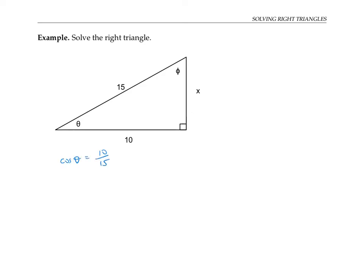Cosine is a good trig function to use here because this equation relates our unknown angle to our two known sides, so we just have one unknown in our equation to solve for. To solve for theta, we just take the cosine inverse of 10 over 15, which is 0.8411 radians or 48.19 degrees.